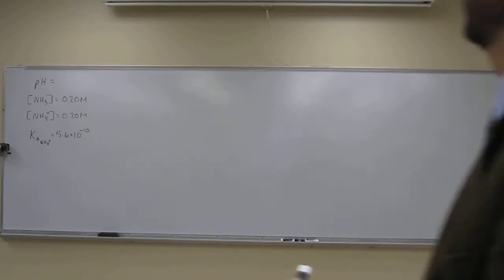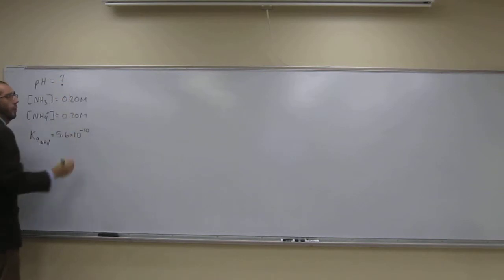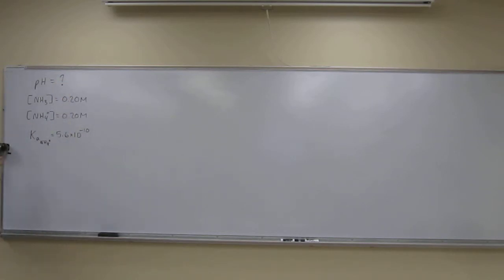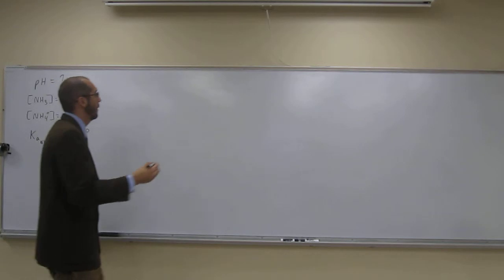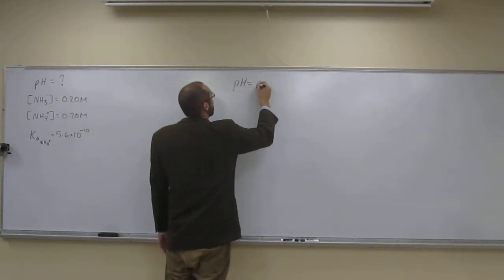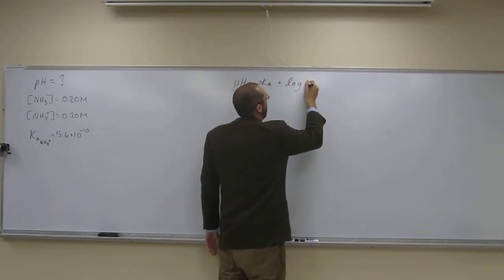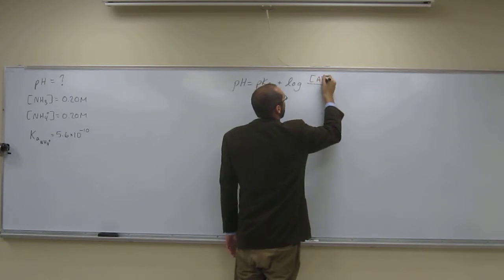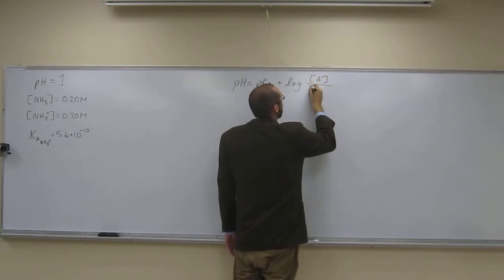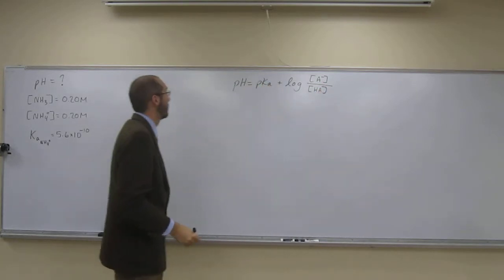So let's do the first part first. We've already talked about the Henderson-Hasselbalch equation, so we can use that. The Henderson-Hasselbalch equation is: pH equals the pKa plus the log of the concentration of the conjugate base over the concentration of the weak acid.